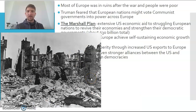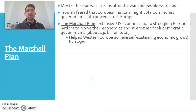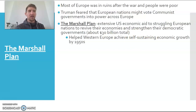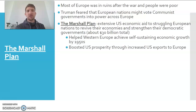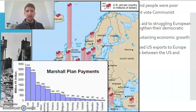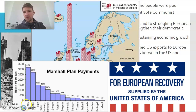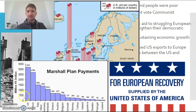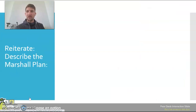The Marshall Plan aimed to help Western Europe achieve self-sustaining economic growth. If these countries invested the aid into their own economies and became more successful, it would also boost U.S. prosperity — more functioning companies in Europe means more people to sell to. It also helped build strong alliances between the U.S. and other democracies. Looking at the chart, most of the money went to the United Kingdom and France, which today remain two of our strongest military allies.